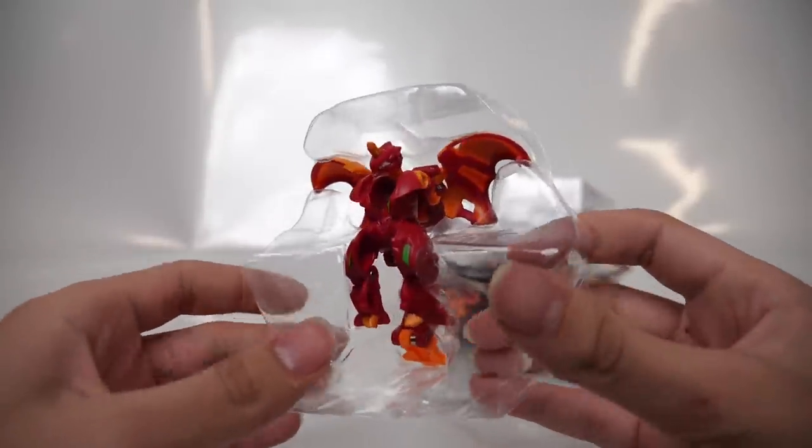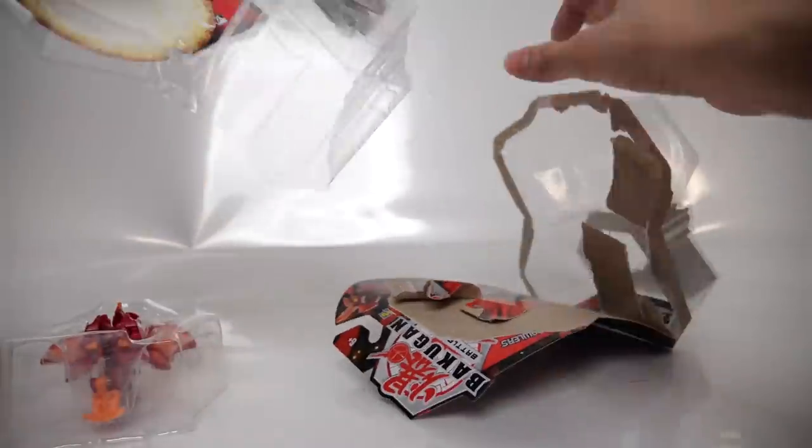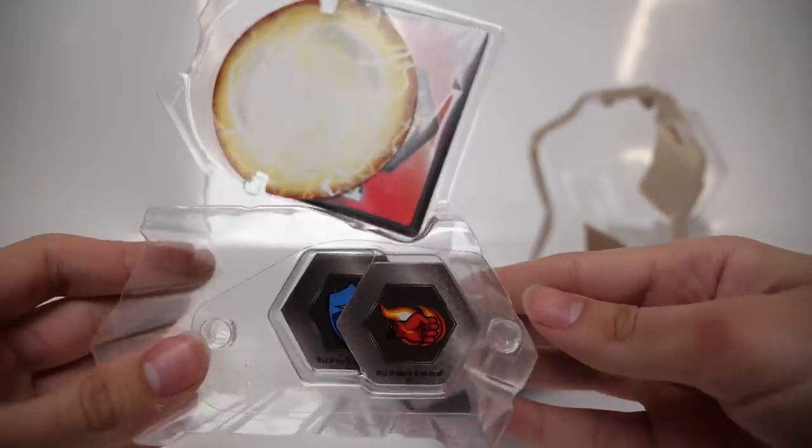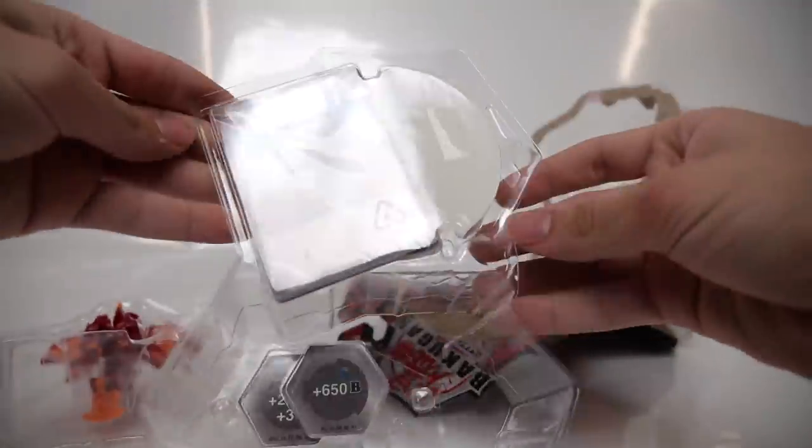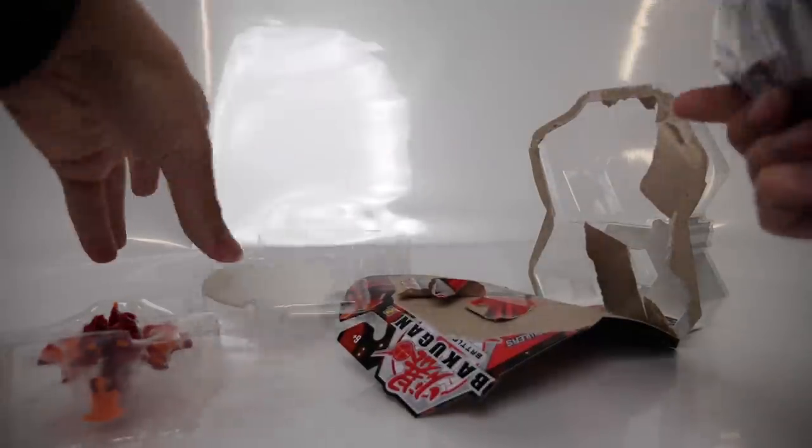Here is Dragonoid and his little blister here. And of course, each Bakugan does come with two Bakukors to use them with, their character card and an ability card. So let's see what cards Dragonoid Ultra comes with.